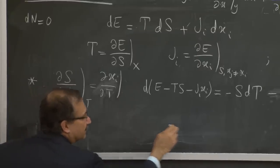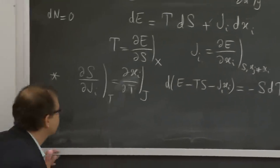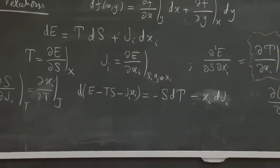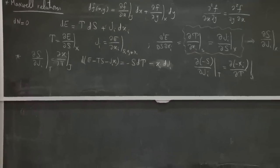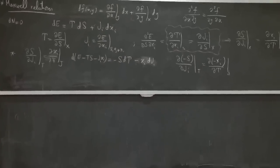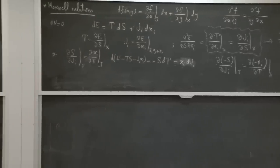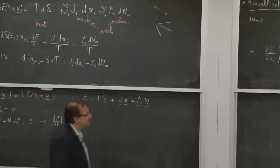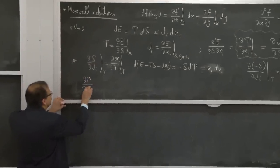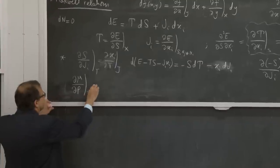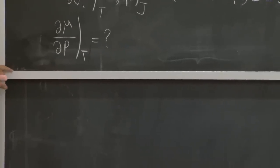You can go and construct anything else that you like also. Let me, for example, try to construct dμ/dp at constant temperature via a Maxwell relation. I start with dE = T dS − p dV + μ dN. I have μ as a first derivative, but I want p to appear as a differential dp rather than as a force, so I form E + pV.